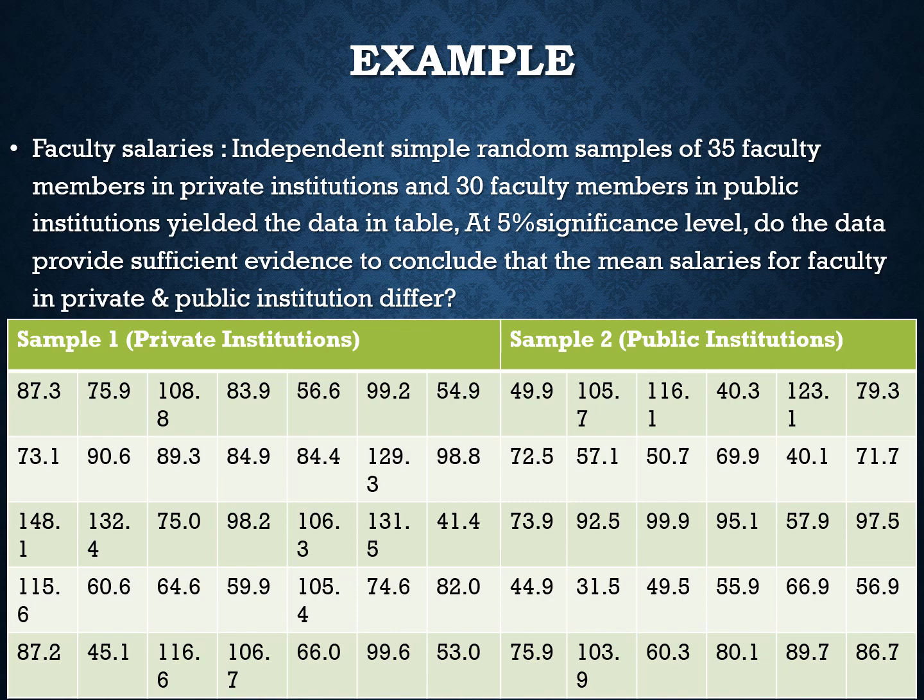The example is taken from Neil A. Weiss, edition 10, on faculty salaries. Independent simple random samples of 35 faculty members in private institutions and 30 faculty members in public institutions yielded the data in the table.